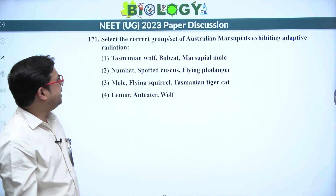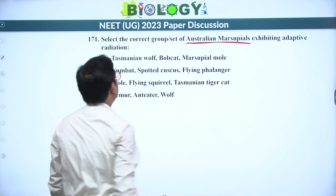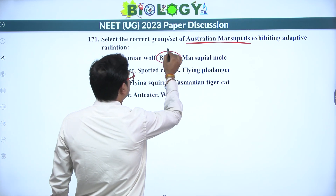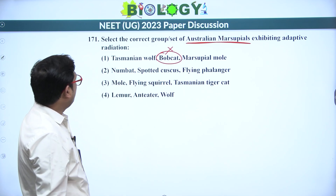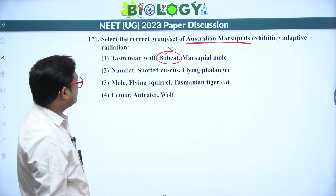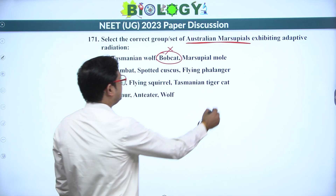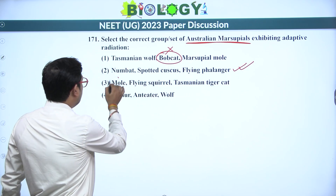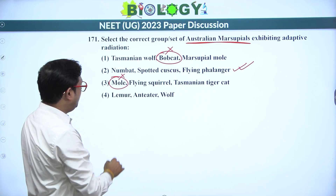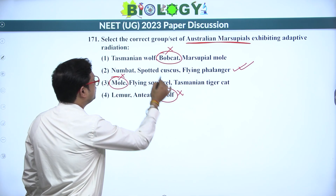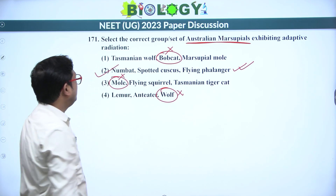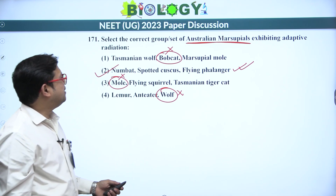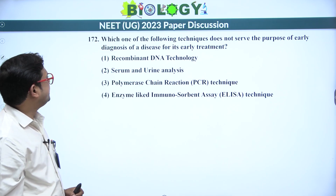Next: select the correct set of Australian marsupials exhibiting adaptive radiation. Numbat, spotted cuscus, and flying phalanger — these are Australian marsupials. The other options include bobcat, lemur, and wolf which are not Australian marsupials. Answer is the second option.